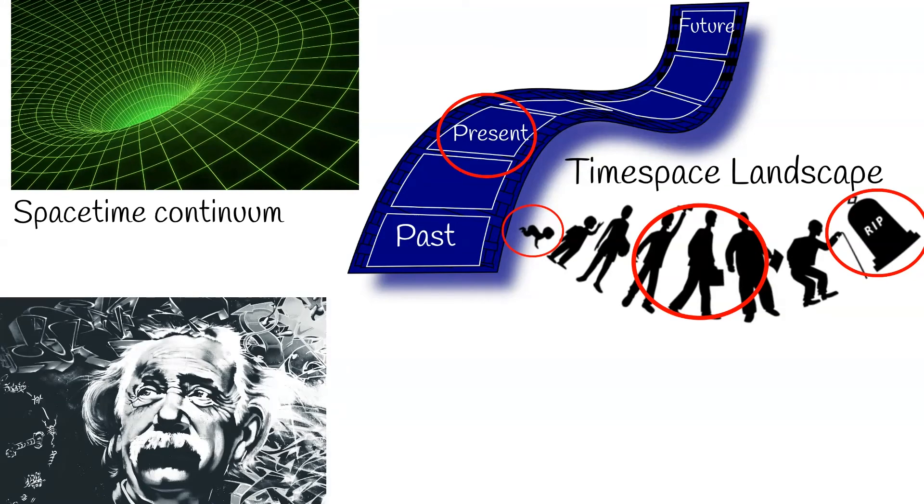According to Einstein's time and space is whole one landscape in which past, future and present are all together. And you just need to find right perspective to see any specific moment of time and event.